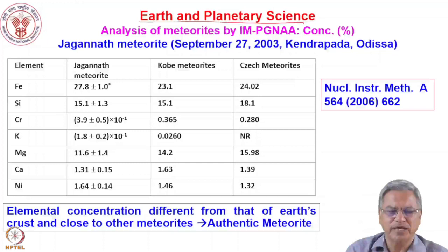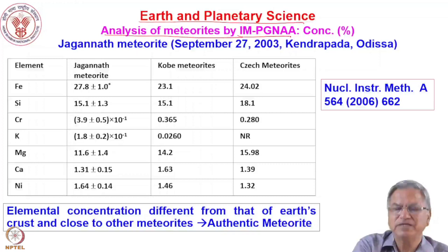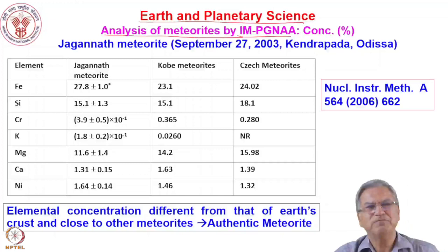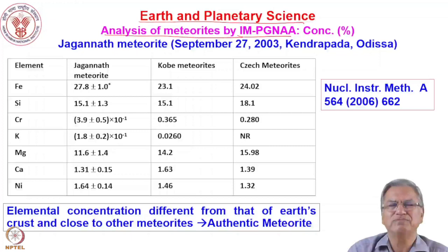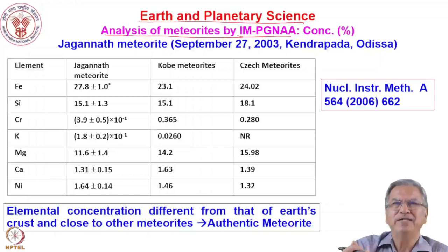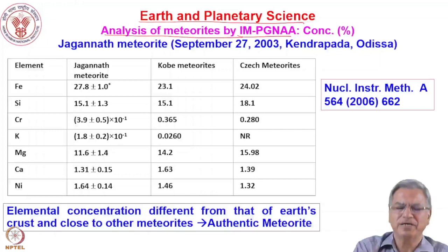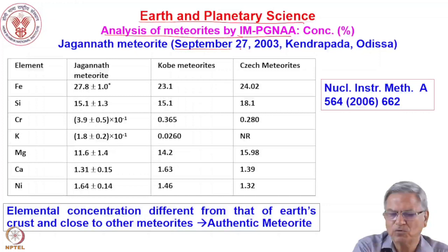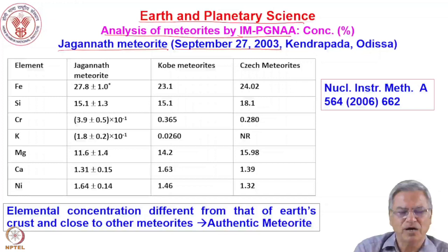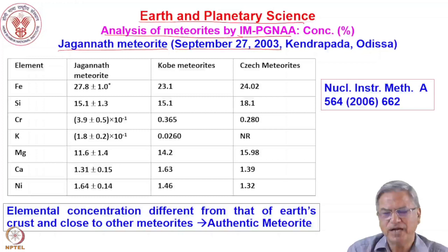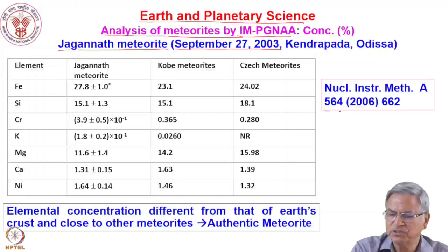One study involved analysis of meteorites using internal mono-standard prompt gamma neutron activation analysis. In prompt gamma NAA, the neutron beam comes out of the reactor building and the entire sample is exposed to neutrons, with gamma rays detected directly. In Odisha, on September 27, 2003, a meteorite fell to Earth named the Jagannath meteorite. This meteorite was characterized by colleagues at BARC and the results were published in a journal.